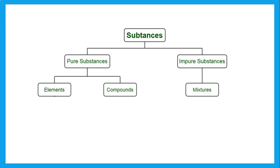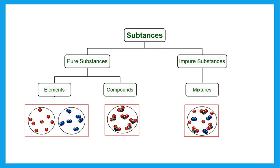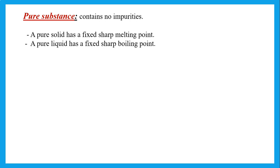Pure substances: elements are pure — we don't have anything added to them and they don't have any impurities. Compounds alone are also pure substances. But remember that a mixture is an impure substance. A pure substance is something that contains no impurities.